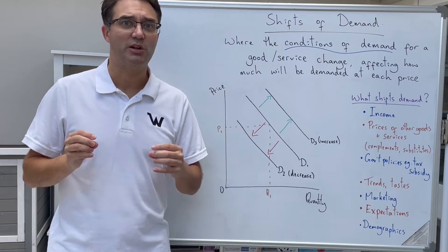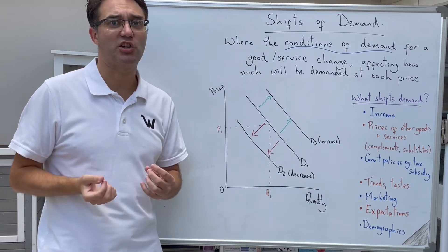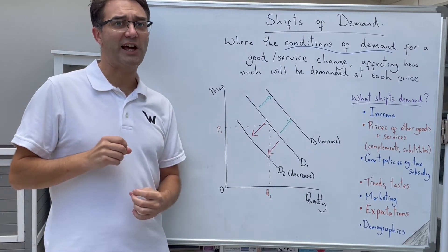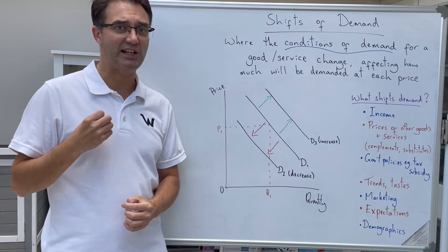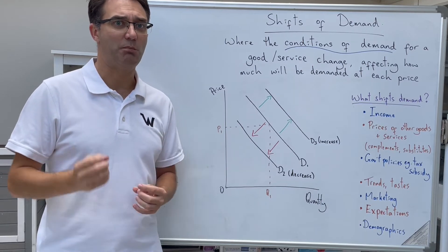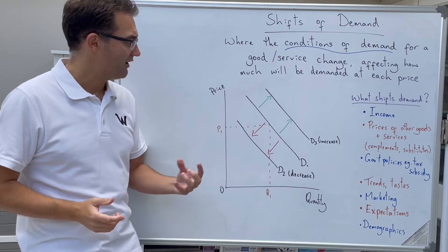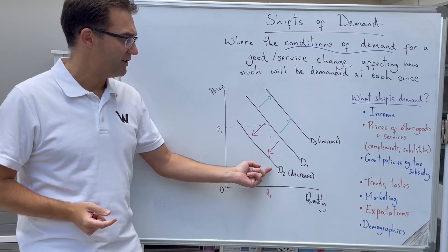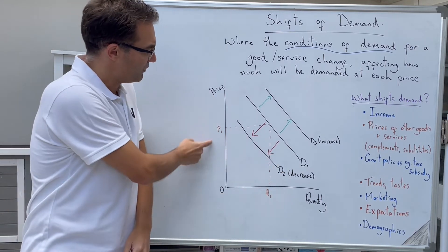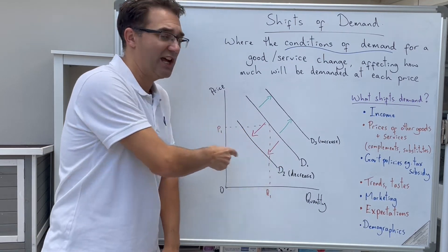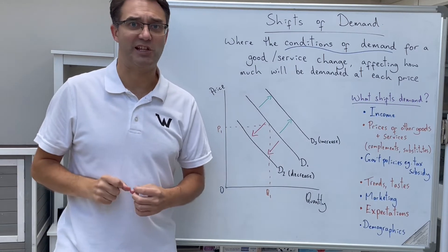For example, there could be a reduction in demand, a shift inwards of the demand curve. At each price, people are less willing and able to buy as much of the good or service as they did previously. So what we'd show is a movement from D1 to D2. At every price level, the quantity that people are willing and able to buy is lower than it was previously.